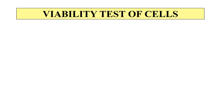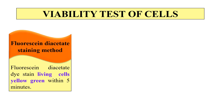In order to check the viability of cells, we generally perform certain staining methods. The first is the fluorescein diacetate staining method. In this we use a dye called FDA — fluorescein diacetate. This FDA dye stains the living cells yellow-green within five minutes of staining, while the dead cells remain unstained.